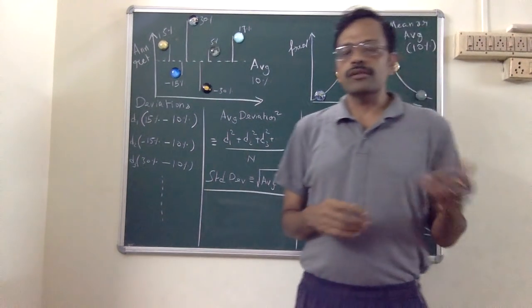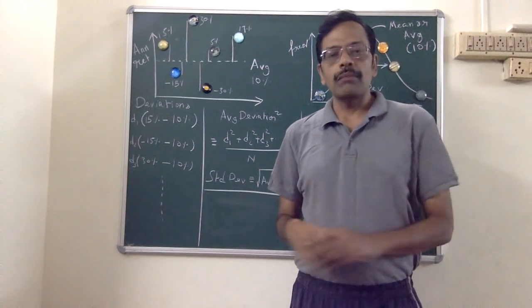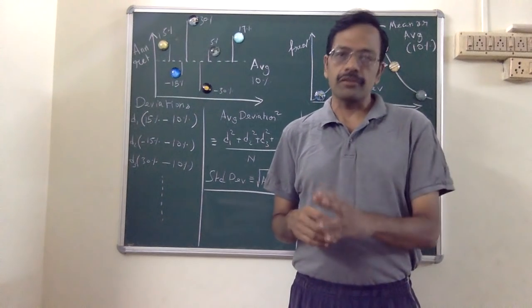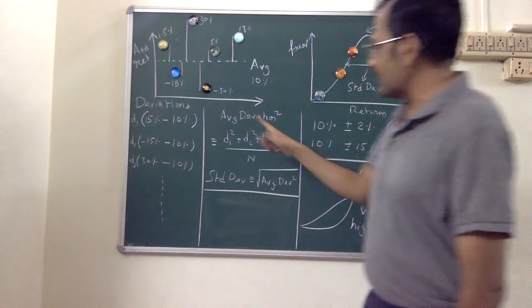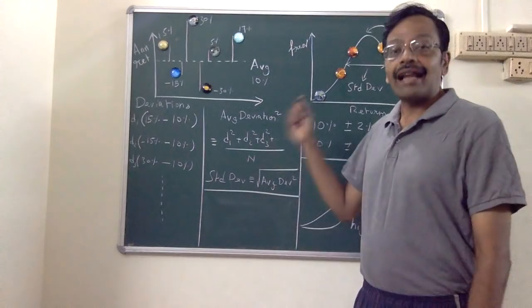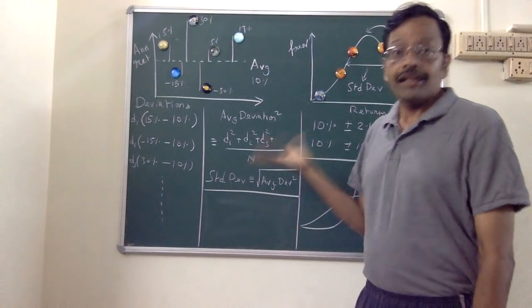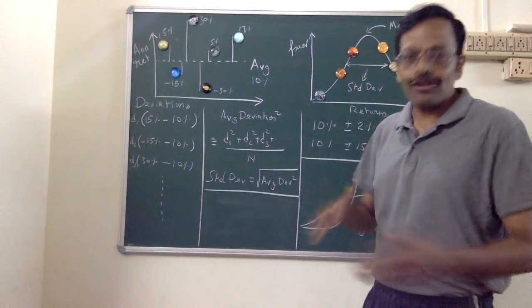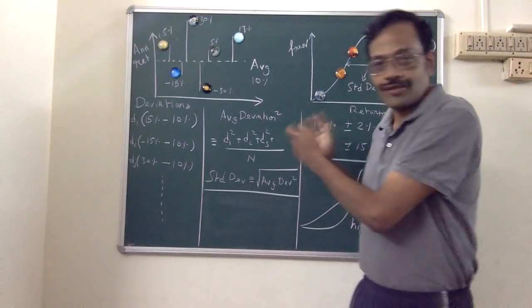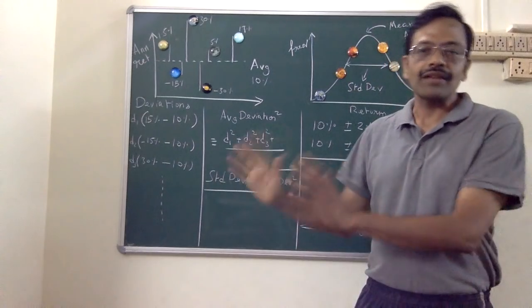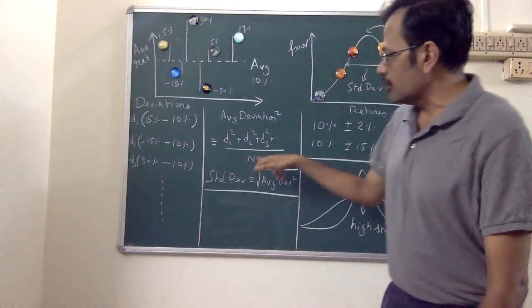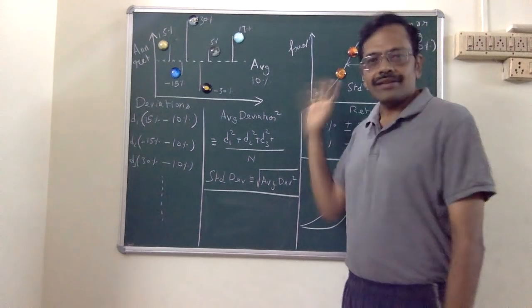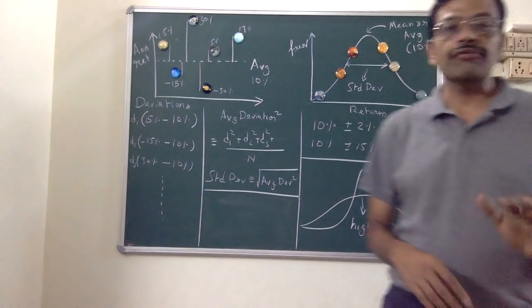Squaring ensures all values are positive — if I have minus 2, minus 2 times minus 2 is also 4. So D1 squared, D2 squared, D3 squared, etc., are all positive. I take the average of the squared deviations, which is the average deviation squared. To define the standard deviation, I just take the square root of this. Technically, you should divide by n minus 1 due to what is known as a bias, but for large data sets it doesn't matter — you can safely use this as the definition of standard deviation.